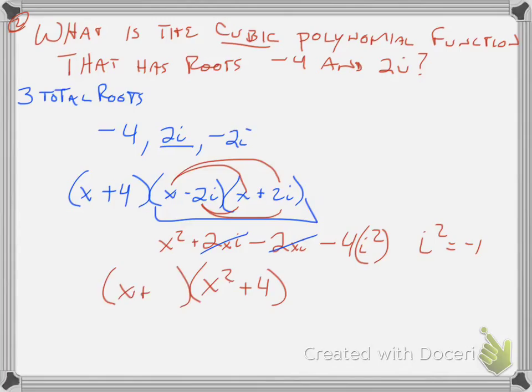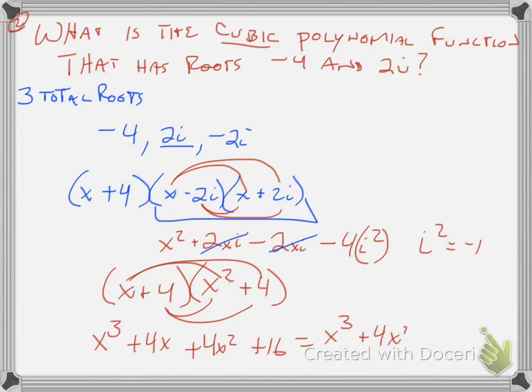And then I multiply it, still, I still got to multiply that with the x plus 4. So that's going to become x cubed, plus 4x squared, plus 4x, plus 16. Nothing combines. All I have to do now is write it in standard form. So I have x cubed, plus 4x squared, plus 4x, plus 16. I had to put this one first, because of the degrees, and that's my polynomial with those roots.